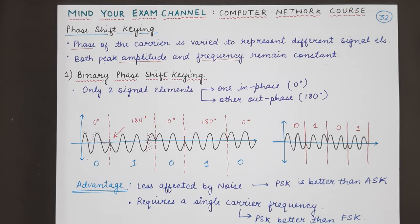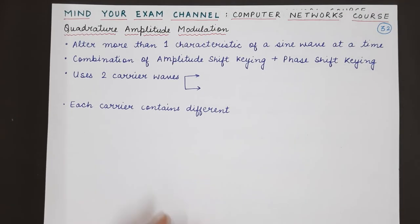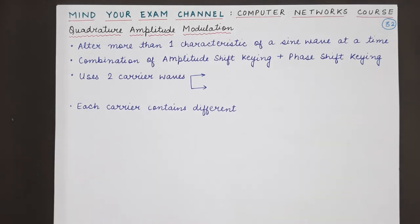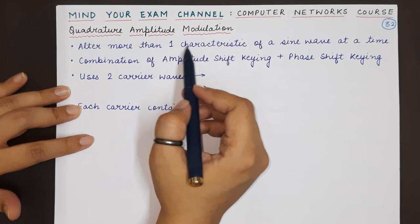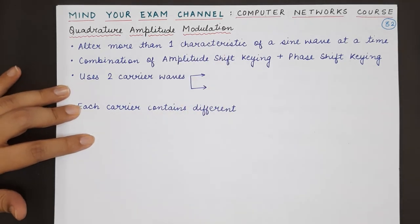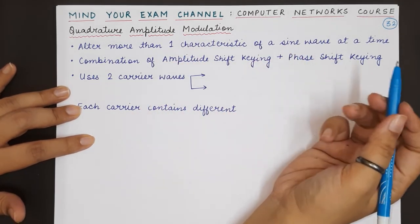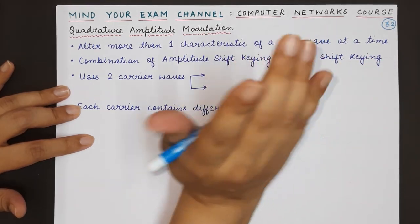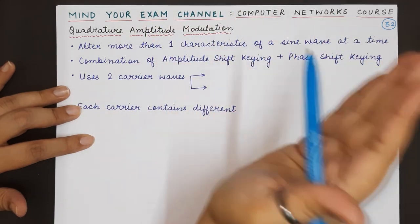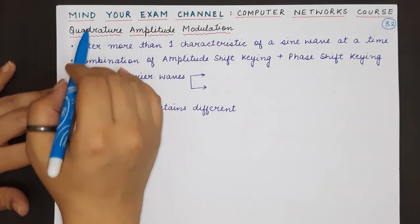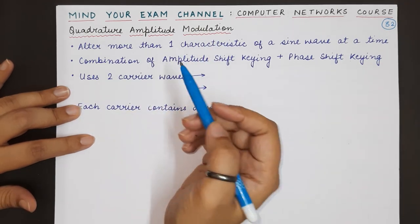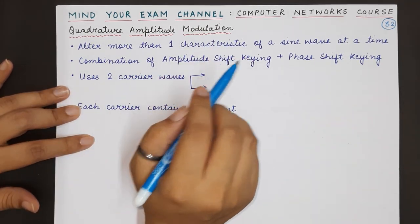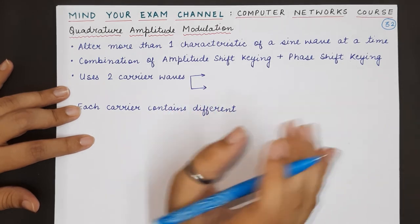Till now, we have seen that we were only varying a single characteristic of the carrier signal or the sine wave, either the amplitude or the frequency or the phase. But quadrature amplitude modulation means that two characteristics of the sine wave of the carrier signal are getting changed based on the digital data that we want to transmit.